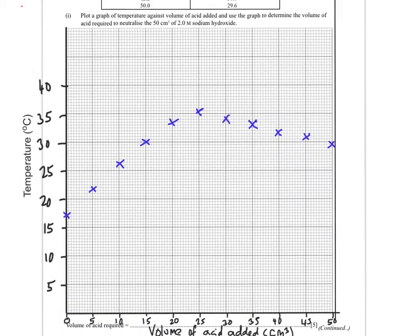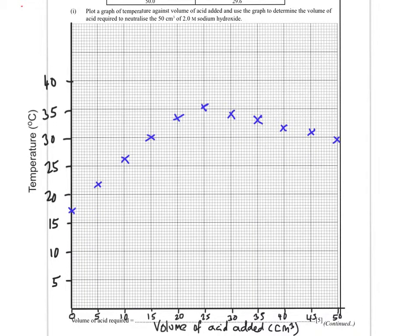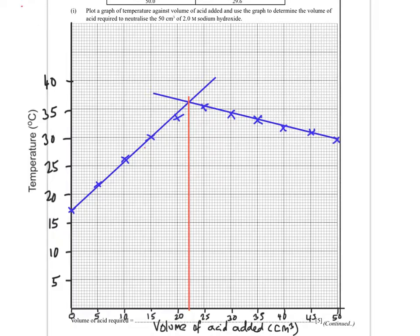Moving the screen back up, it says use the graph to determine the volume of acid required to neutralize 50 cm³ of 2.0 molar sodium hydroxide. The way you do this is because there's two different gradients, do two lines of best fit and see where they cross over. Doing the line of best fit through the two parts of the graph, where they intersect, I can extrapolate down to the x-axis. You can see clearly that it's at 22.5 cm³.